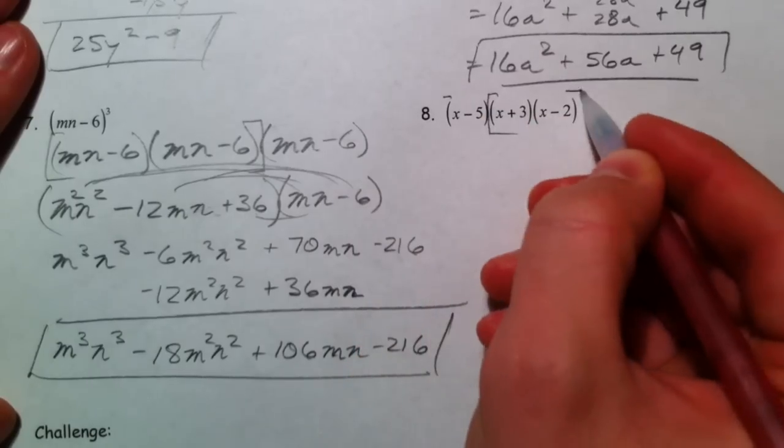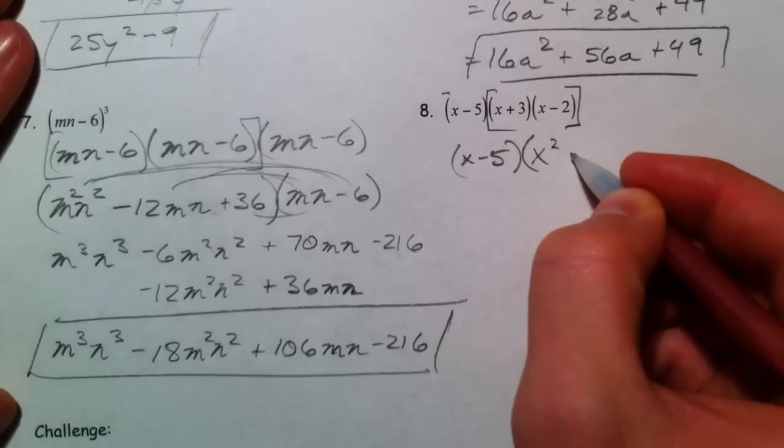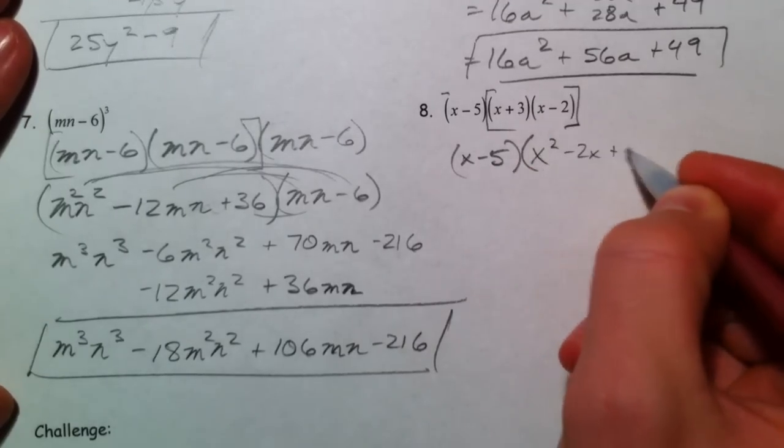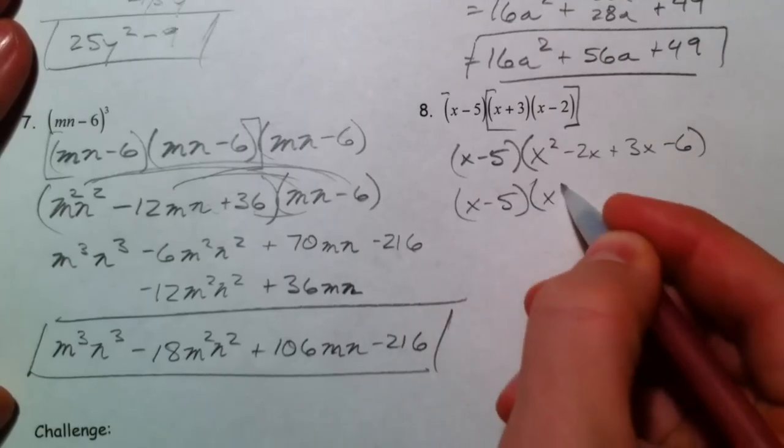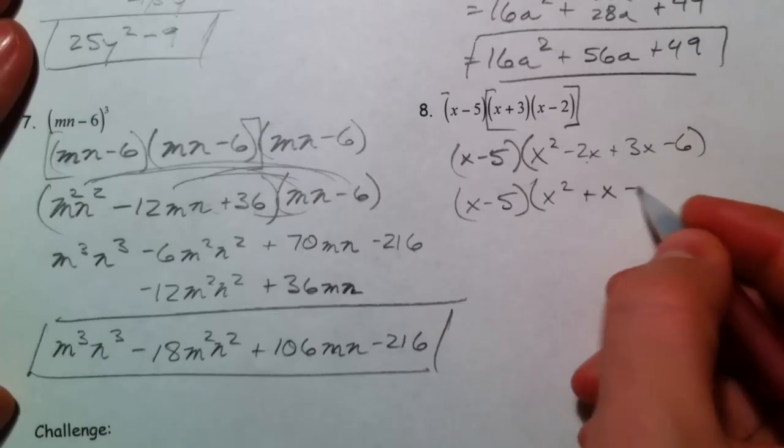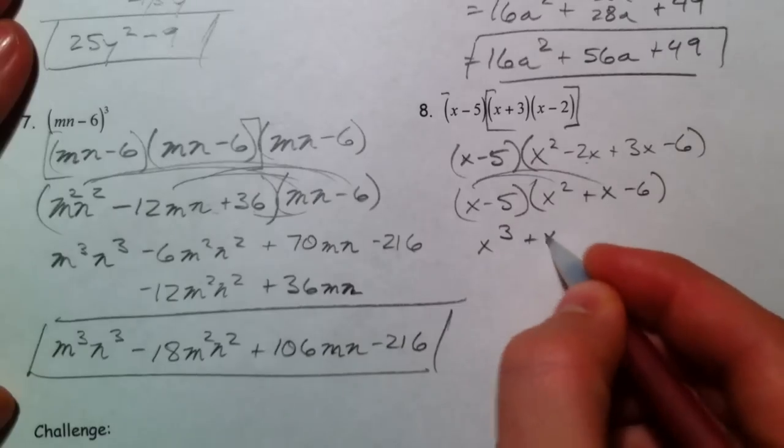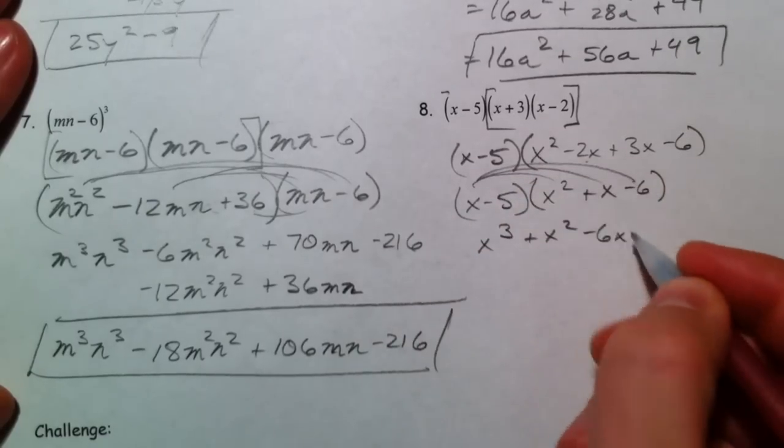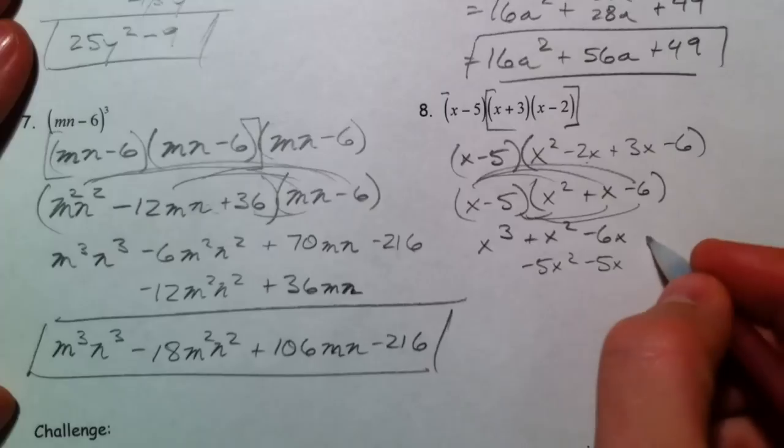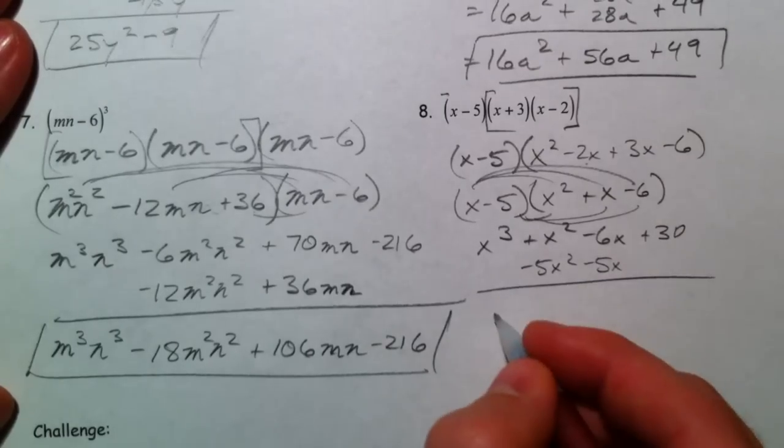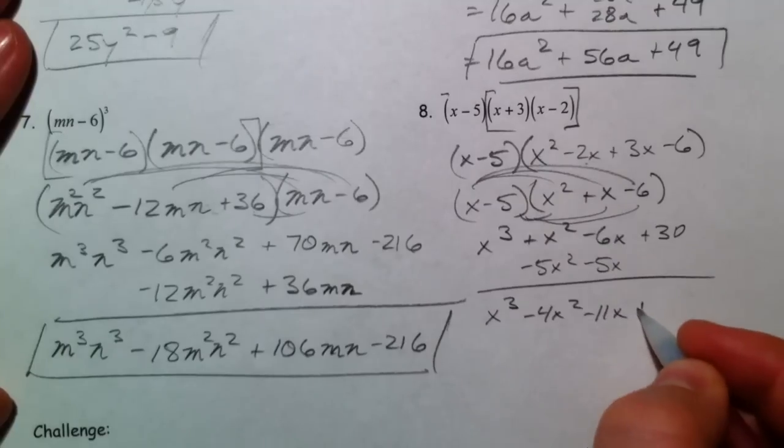So, that's what I'll do here. I'll multiply those two together first. x minus 5 times, that'll be x squared, minus 2x, plus 3x, minus 6. And, again, we're just, I typically, in my head, would have gone straight to, negative 2x plus 3x is plus 1x. And, then, just have a system. x cubed, x squared, minus 6x, minus 5x squared, minus 5x, and plus 30. So, you have x cubed, minus 4x squared, minus 11x, plus 30.